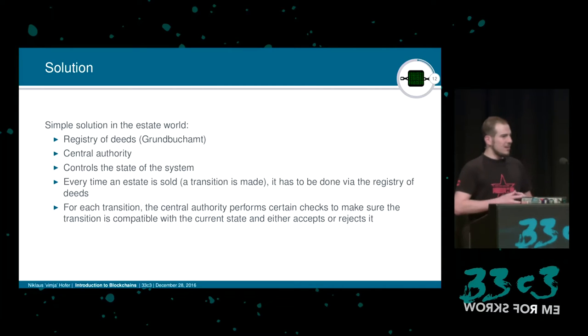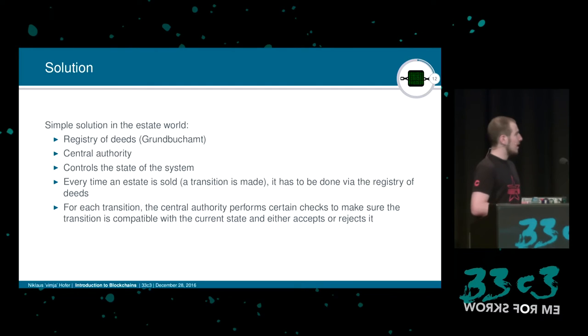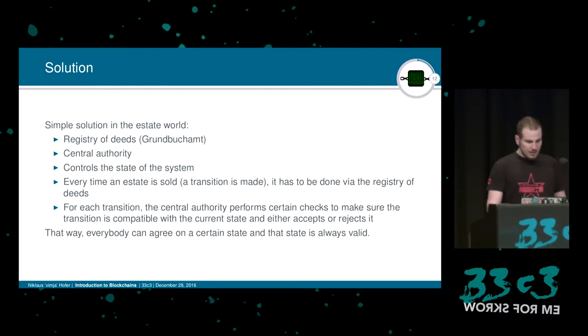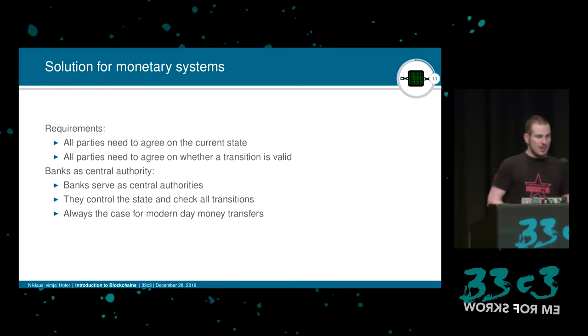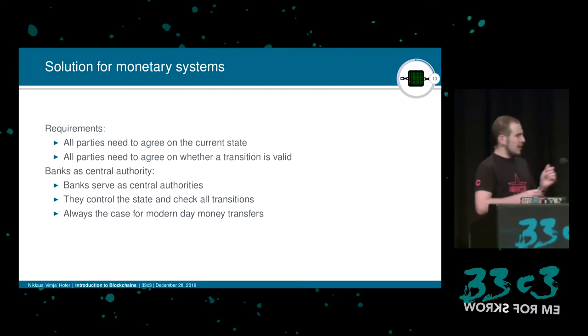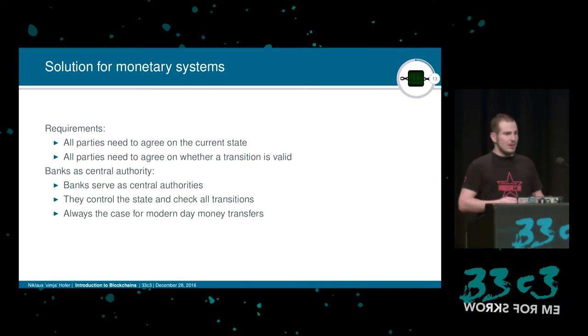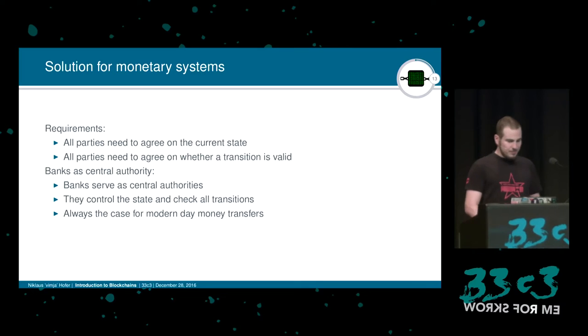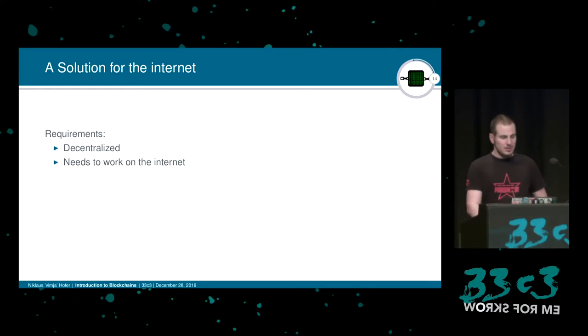In the world of real estate there is a registry of deeds that manages all changes of deeds. Each change has to be processed by this registry, which checks if the change is acceptable and if the seller actually owns the property — and this can prevent double spend attacks. The same solution works just as well for financial systems. Thinking of banks: if I have an account, the bank becomes the central authority. Each time I make a transaction the bank checks if I have the necessary amount, and my account balance will be debited. The bank holds all of the state, and that works surprisingly well.